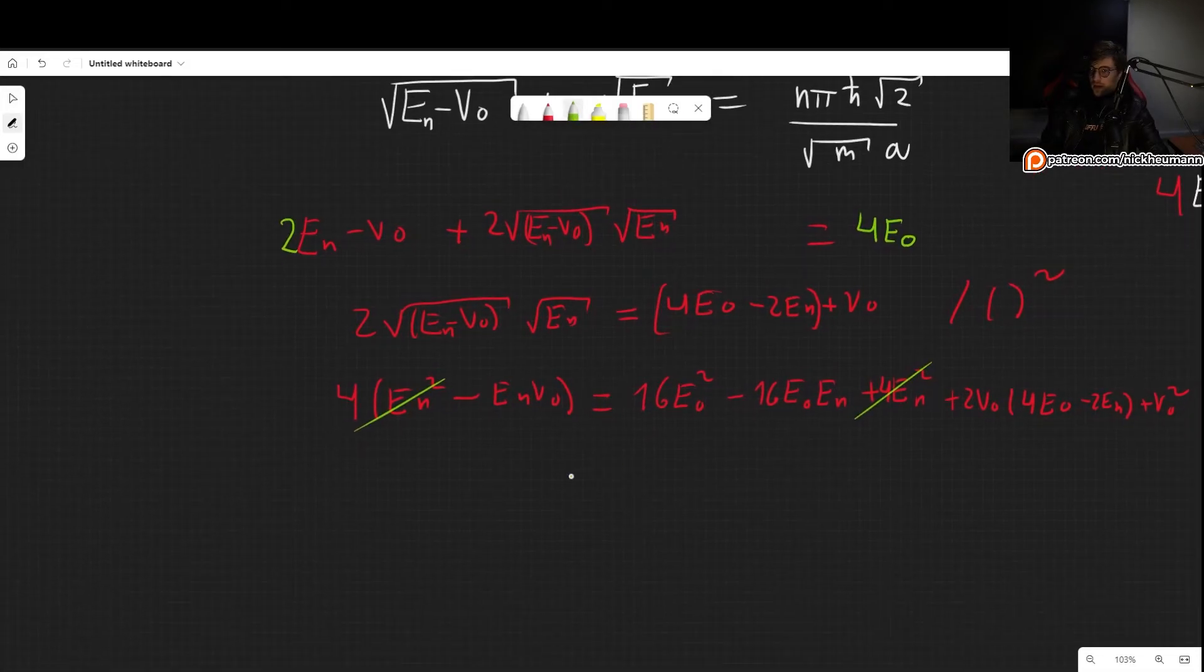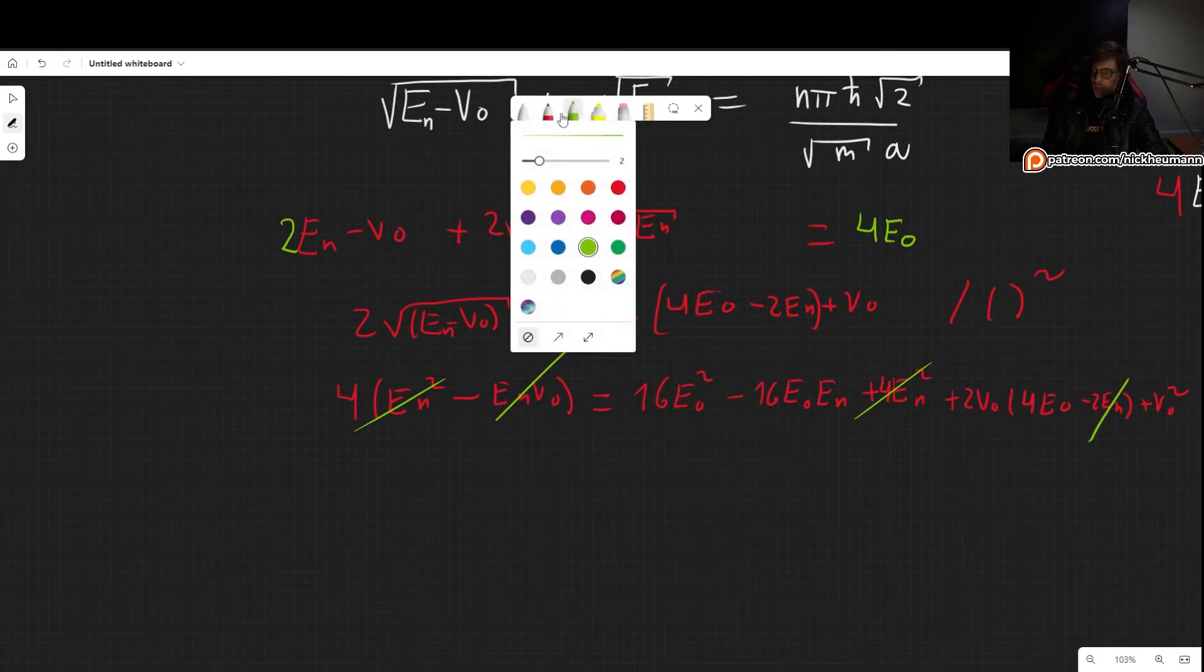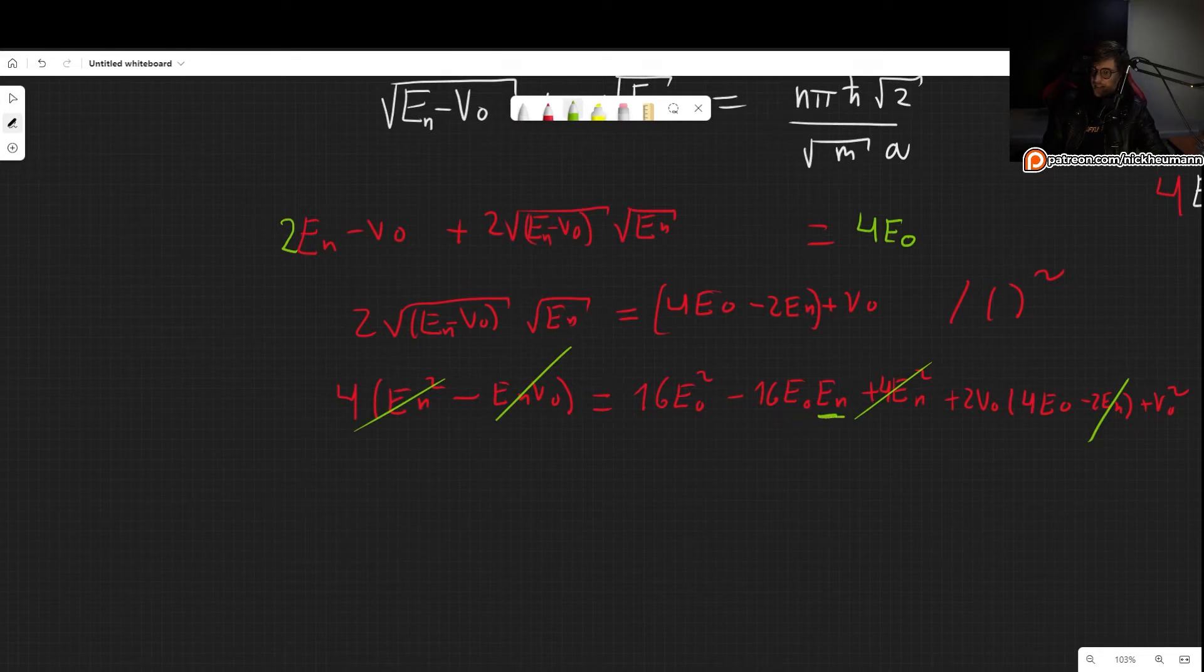Now let's see: we got 4EN squared here and 4EN squared here. Then we got 4ENV0, and here we have minus 4ENV0 and here we have minus 4ENV0. So we are only left with this term right here that has EN. So let's pull it to the left, so we get 16ENE0 is equal to 16E0 squared plus 8V0E0 plus V0 squared.